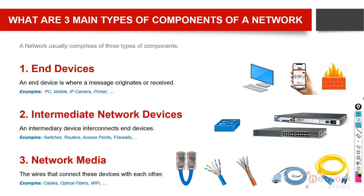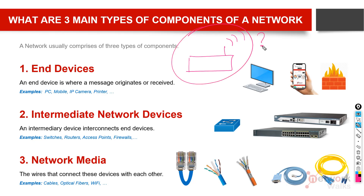Let me ask you a quick question. You know, everyone has a Wi-Fi device at home which we usually call a Wi-Fi modem or Wi-Fi router. So which kind of device is this Wi-Fi modem at our home? Usually TP-Link, Huawei, Cisco router — which kind of device is it? Is it an end device, intermediate, or network media? Please write your answer in the comments below.